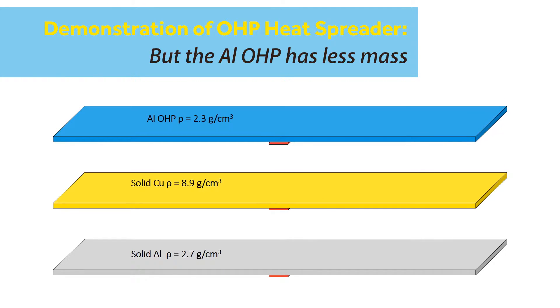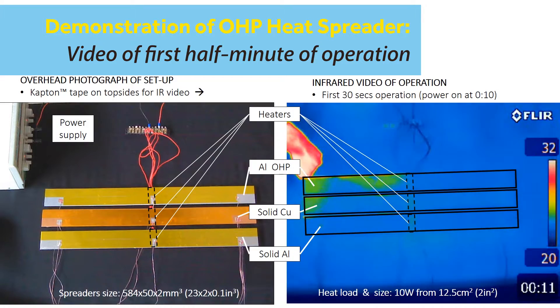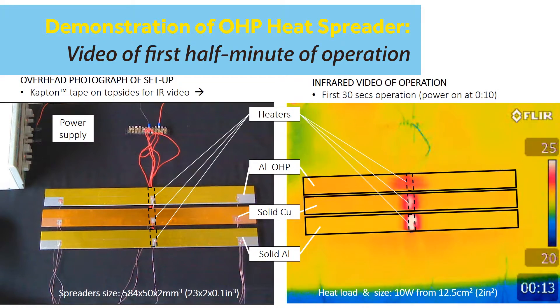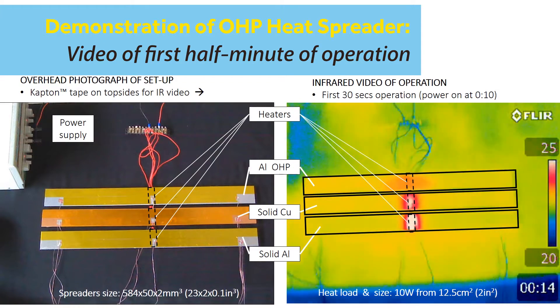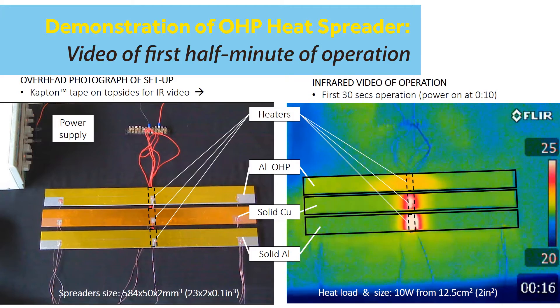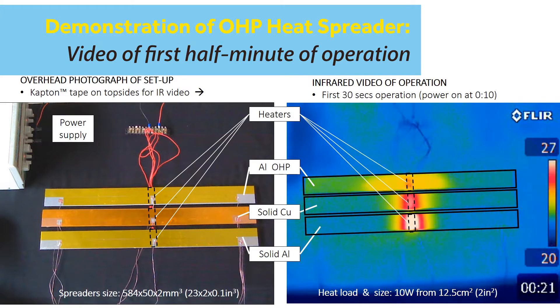After one minute of being powered by the 10 watt heater, the aluminum and copper heat spreaders' hot spots are 8 and 6 degrees Celsius above ambient respectively, while the OHP's hottest spot is merely 2 degrees above ambient.